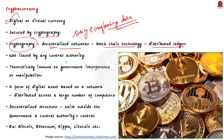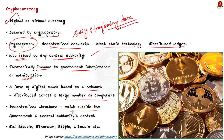A defining feature of cryptocurrencies is that they are generally not issued by any central authority. This makes them theoretically immune to government interference or manipulation. Simply, a cryptocurrency is a form of digital asset based on a network that is distributed across a large number of computers. The decentralized structure allows them to exist outside the control of governments and central authorities. Note that Bitcoin is the most popular and valuable cryptocurrency. Other cryptocurrencies include Ethereum, Ripple, Litecoin, etc.